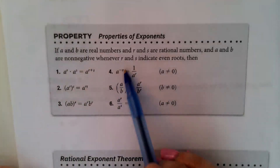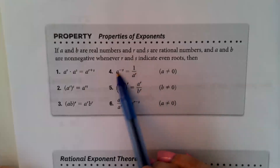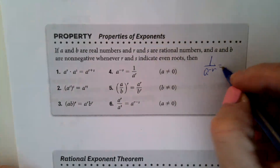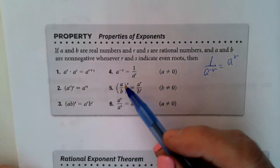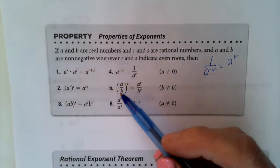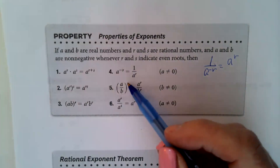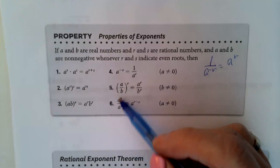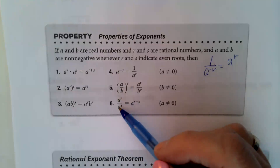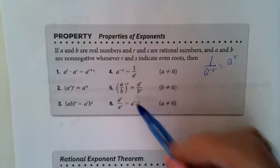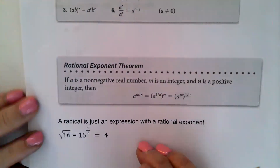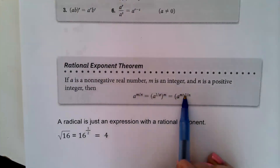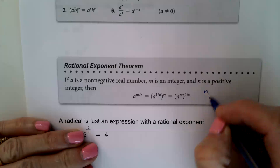A base to a negative exponent is positive in the denominator — if it's negative in the numerator, it's positive in the denominator, and vice versa. Also, (a/b) to the r means the exponent applies to all values inside the parentheses. If two bases are the same, a to the r over a to the s equals a to the (r minus s). The rational exponent theorem says a to the m/n equals the nth root of a to the m.